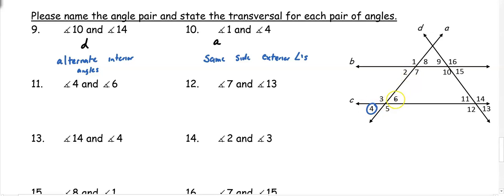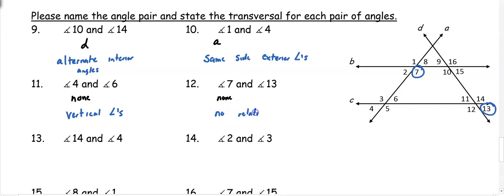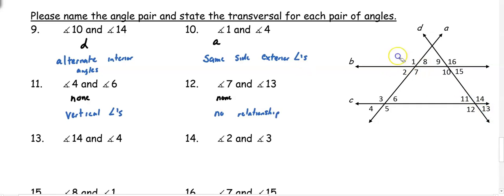Number 11: angle 4 and angle 6. We have to be careful — angles 4 and 6 are in the same group of four, so the only relationships they can have are vertical angles or a linear pair; there is no transversal. Since they're diagonal from each other, they are vertical angles. Number 12: angles 7 and 13 do not share a common line and are not in the same group, so they have no transversal and no relationship with each other.